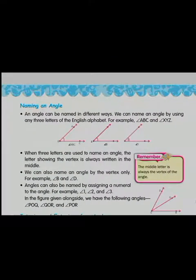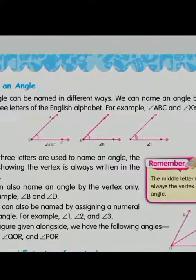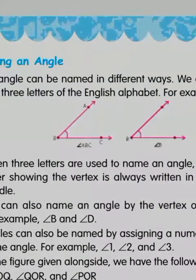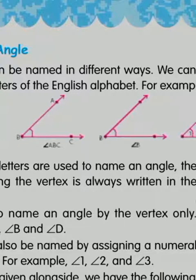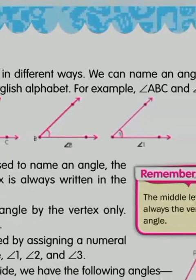Angles can be named in different ways. We can name an angle by using three letters of the English alphabet, or we can write only the middle letter, or we can use numerals. In the first figure, when three letters are used to name an angle, the letters are A, B, and C, where B is the vertex of the angle — so it will be in the center. So there is angle ABC. We can also denote it with only the middle letter, which is B, giving angle B. Third, we can use a numeral such as angle 1.